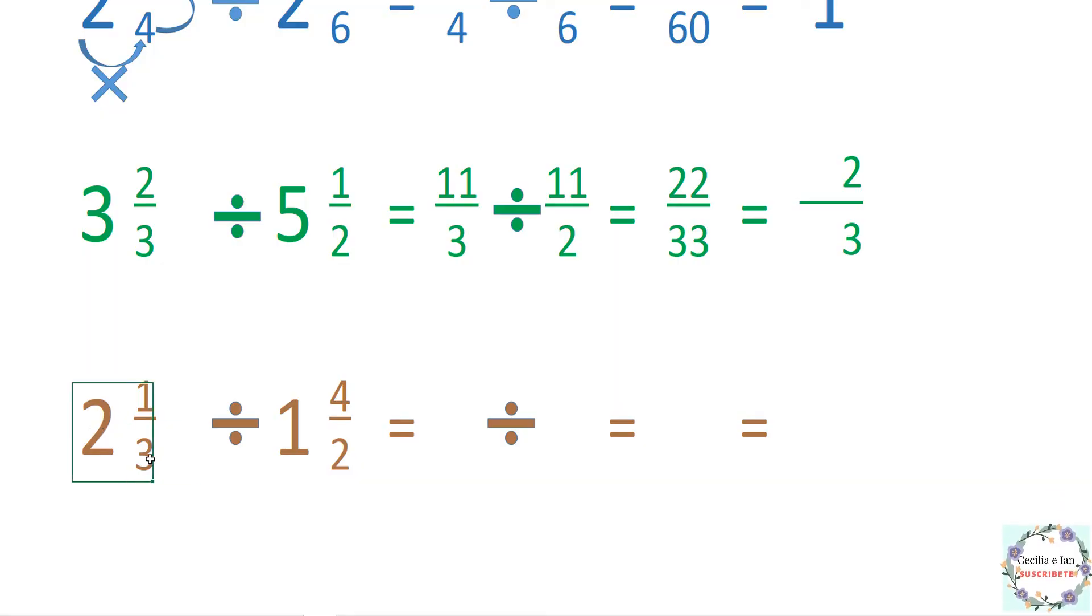Vamos a dividir 2 enteros 1 tercio entre 1 entero y 4 medios. Aquí multiplicamos 2 por 3 son 6, y 1, 7, y ponemos aquí. 1 por 2 son 2, más 4, 6. El 3 y el 2 simplemente se van a recorrer, aquí ponemos el 3, y aquí ponemos el número 2. Ahora multiplicamos 7 por 2 son 14, 3 por 6, 18, lo ponemos aquí. Ahora estos números les vamos a sacar mitad, los dos tienen mitad: 14 entre 2 nos dan 7, 18 entre 2 nos dan 9. Y aquí ya tenemos nuestro resultado.